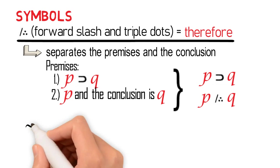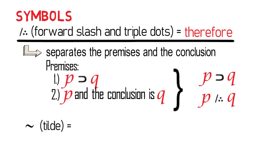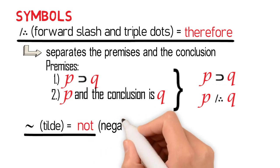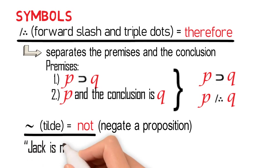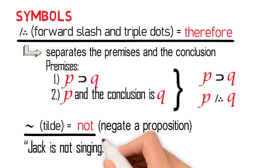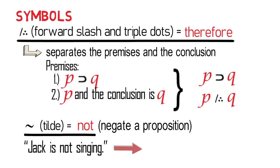Lastly, we have the symbol tilde, which is read as 'not.' This is used to negate a proposition. Any proposition can be negated. Thus, the proposition 'Jack is not singing' is symbolized as ~P.